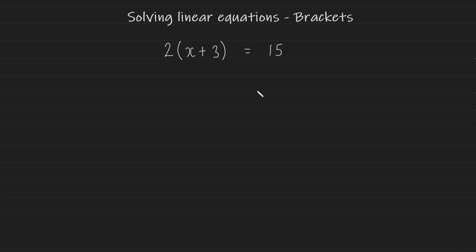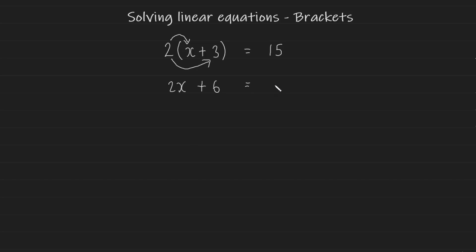The go-to method, in my opinion, is to expand the brackets first. What that means is you multiply the number on the outside by the terms on the inside. So 2 multiplied by x gives us 2x, and positive 2 multiplied by positive 3 gives us positive 6, and this is equal to 15.